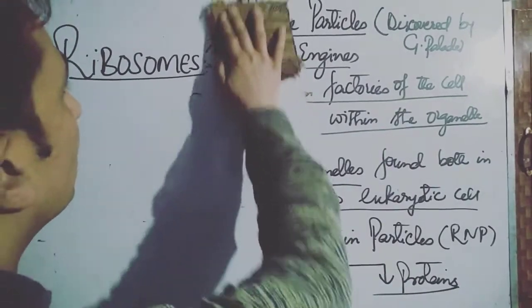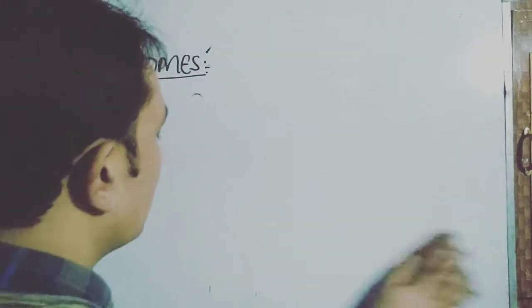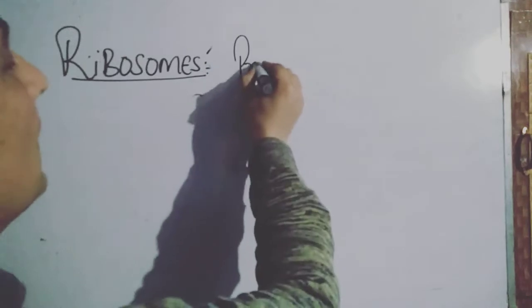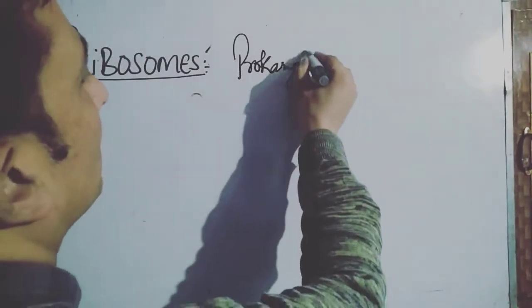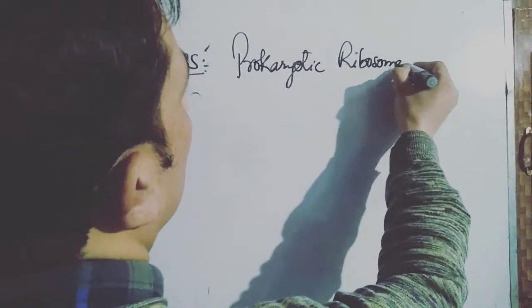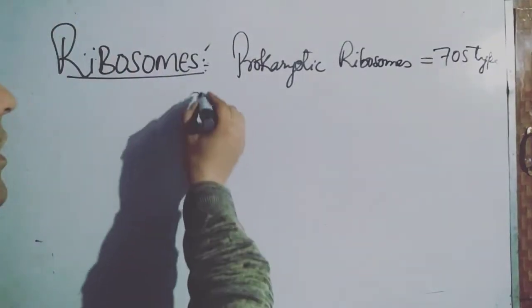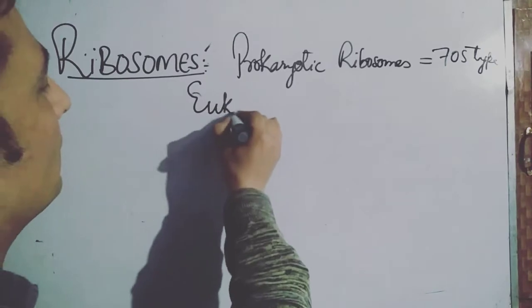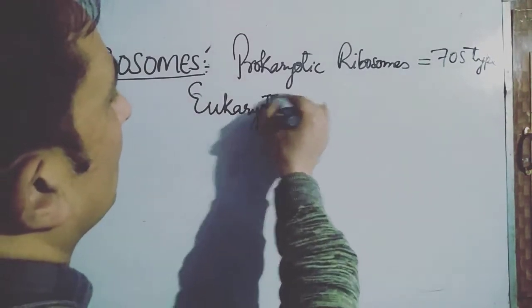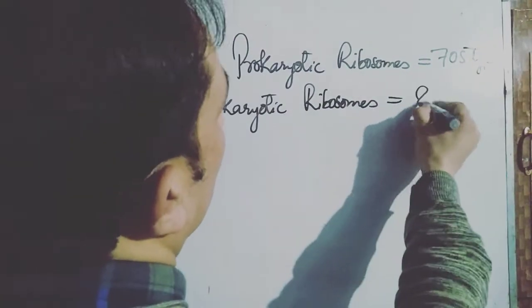Now we will discuss the types of ribosomes found in prokaryotes and eukaryotes. Prokaryotic ribosomes are of the 70S type, while eukaryotic ribosomes are of the 80S type.